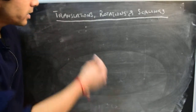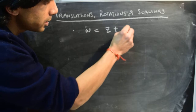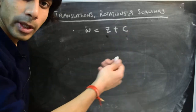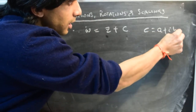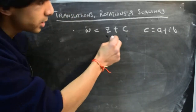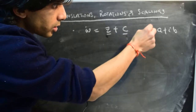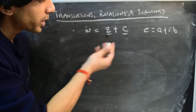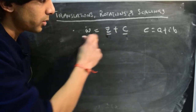Let's say you have a function w = z + c, where z is a complex variable and c is some complex constant. We write c as a + ib. We can think of this as a simple algebraic operation — adding a constant complex number c to the variable z to get w — or we can think of it as a function or mapping from the z-plane to the w-plane.